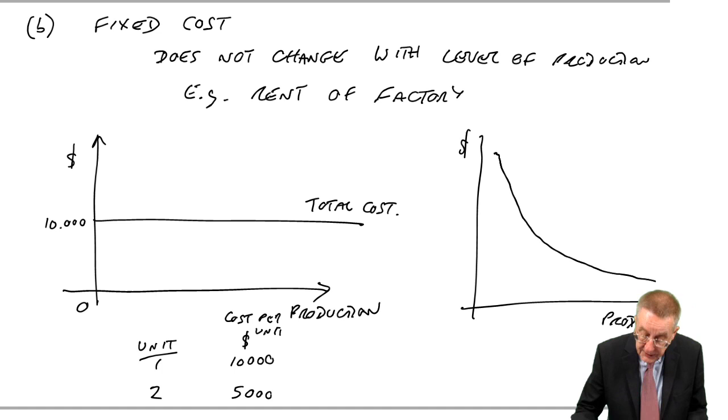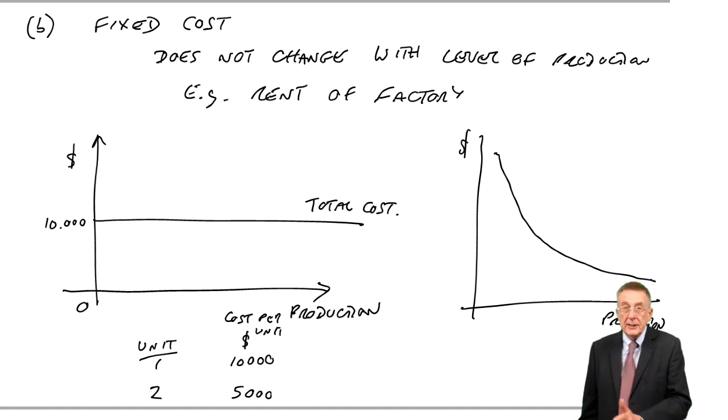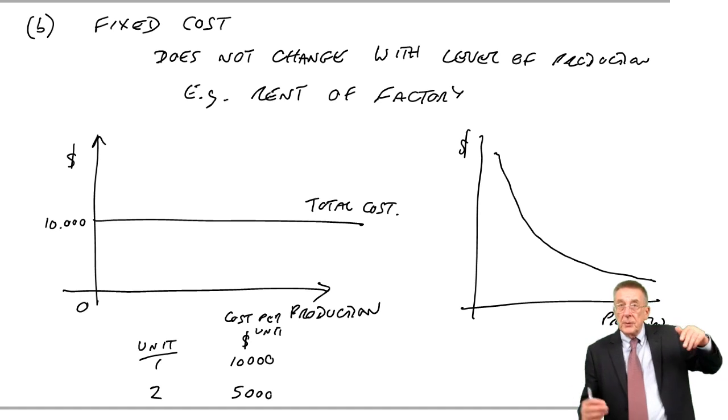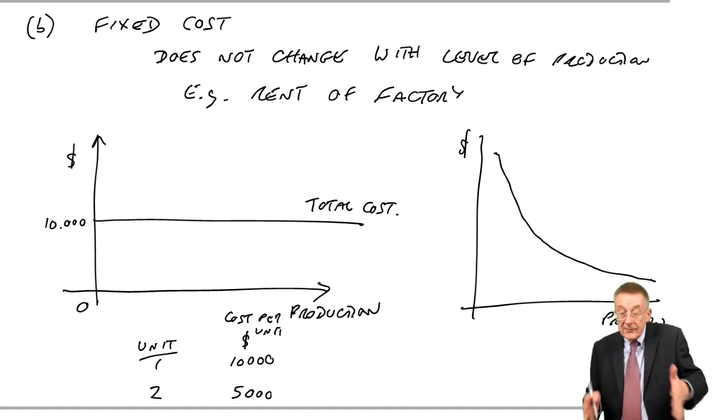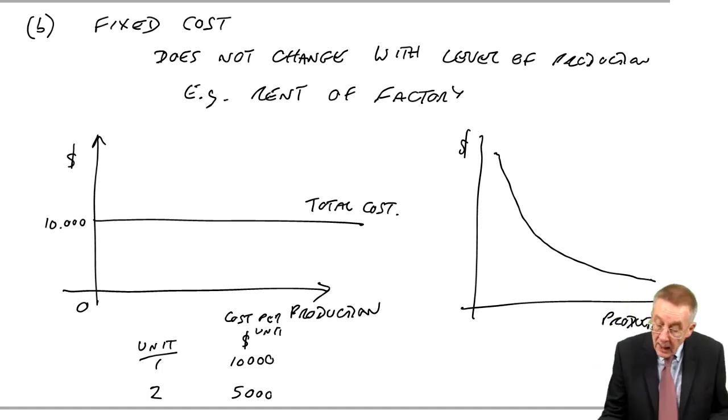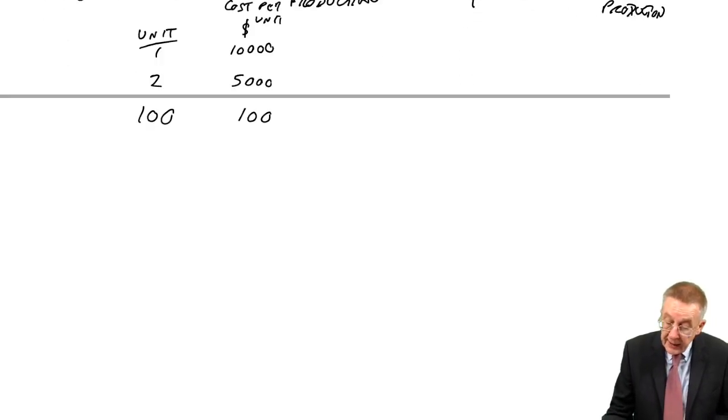So although the total fixed cost will remain unchanged, the cost per unit will fall. In fact, it's a curve. But this isn't a maths exam. Simply, the more you produce, the cost per unit of this factory rent will be lower. Those are the two main categories, variable and fixed.